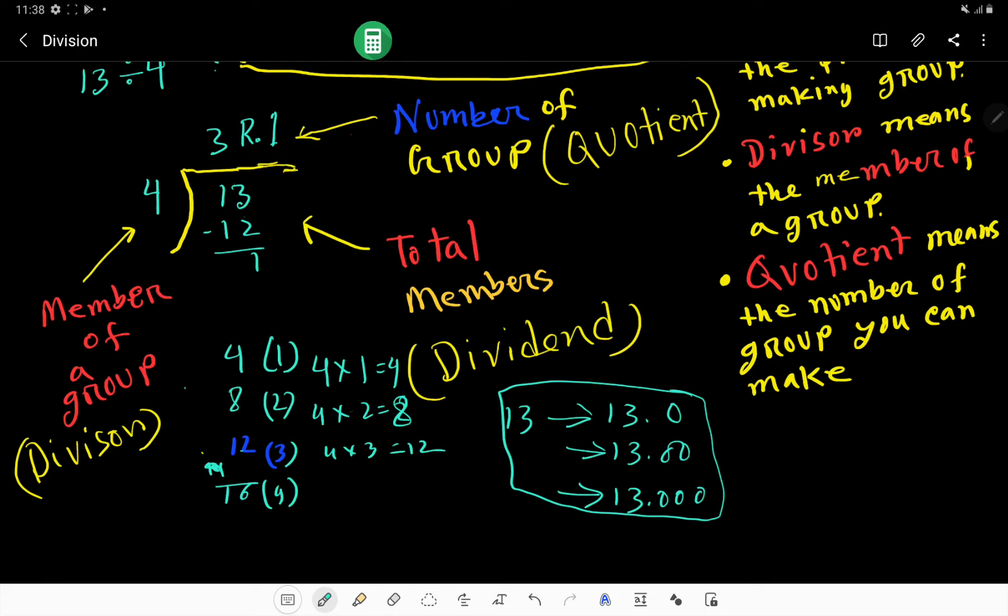Let me visualize this so you can have a clear analysis. Here we have 13 people and we have to make groups of 4 at a time. 4 people, then 8 people, then 12, and 1 left.